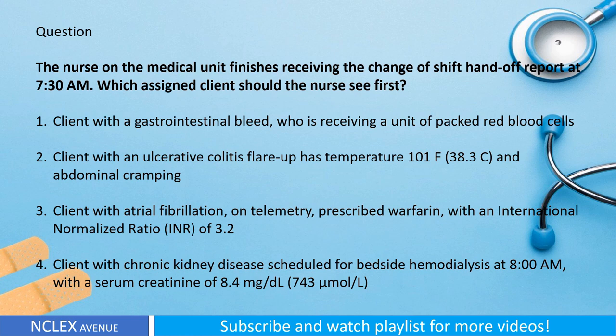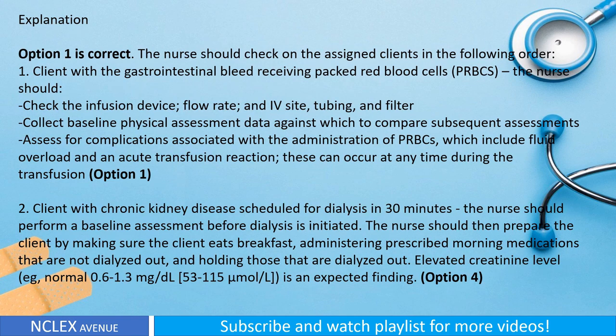Explanation: Option one is correct. The nurse should check on the client with the gastrointestinal bleed receiving packed red blood cells (PRBCs) first. The nurse should check the infusion device flow rate, IV site, tubing and filter, collect baseline physical assessment data, and assess for complications associated with administration of PRBCs — which include fluid overload and acute transfusion reaction — as these can occur at any time during the transfusion.